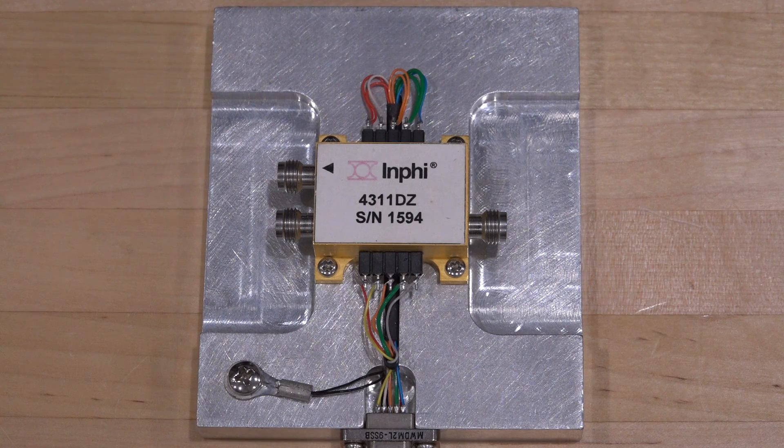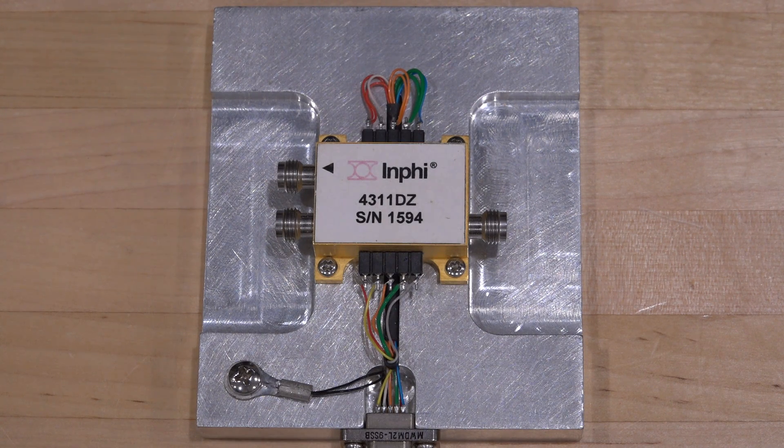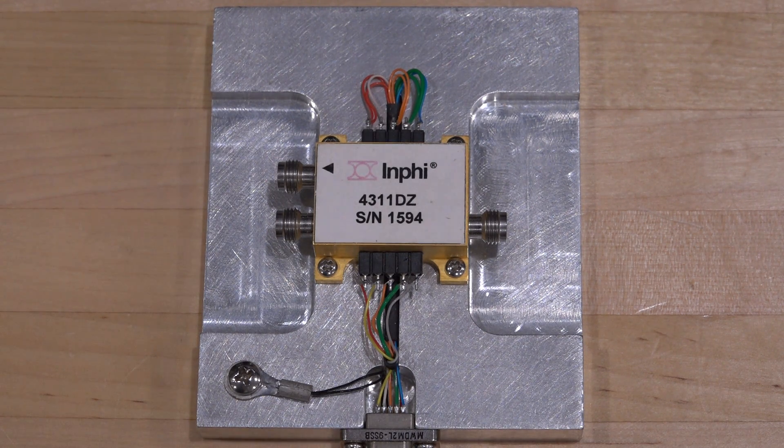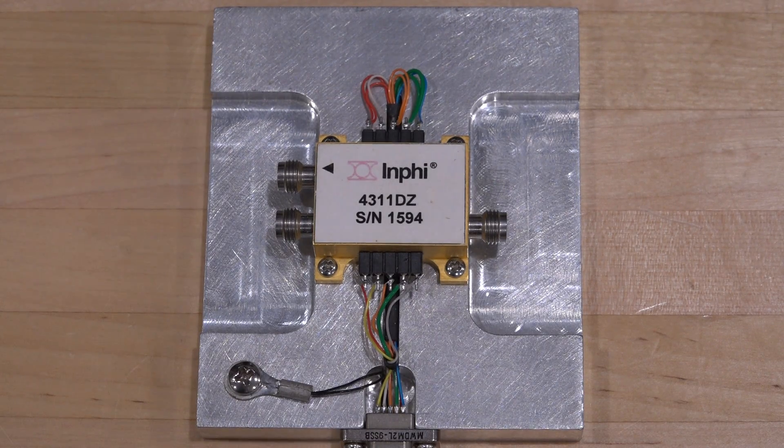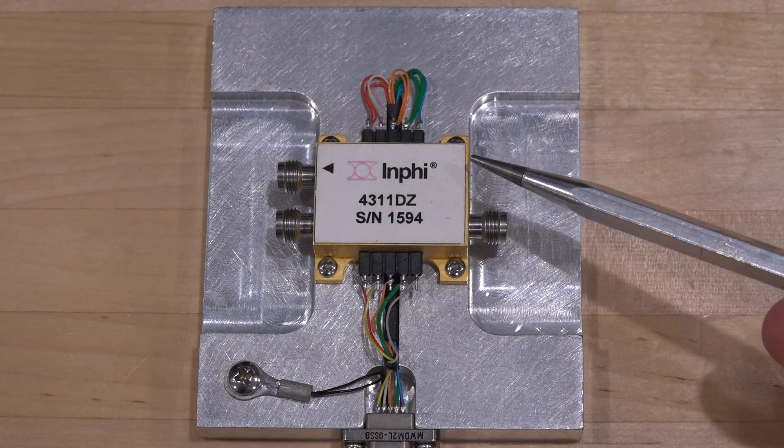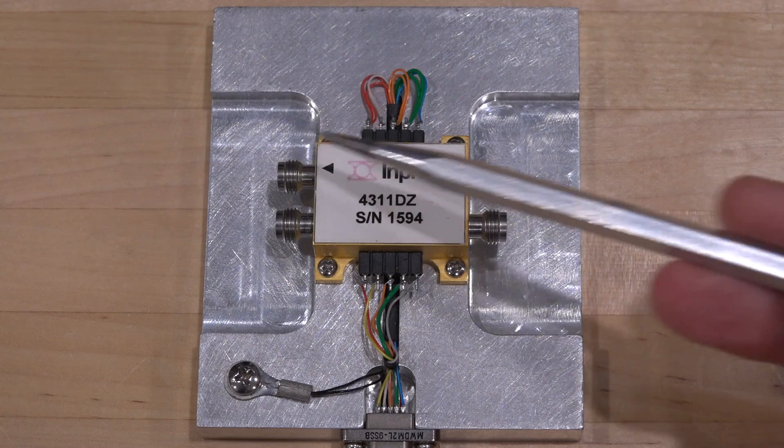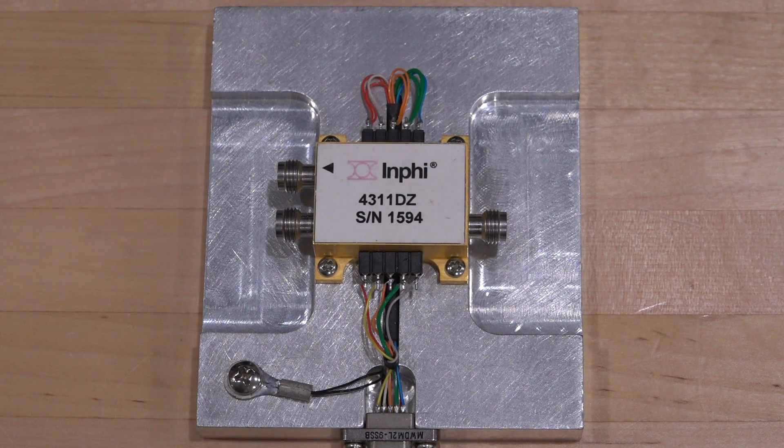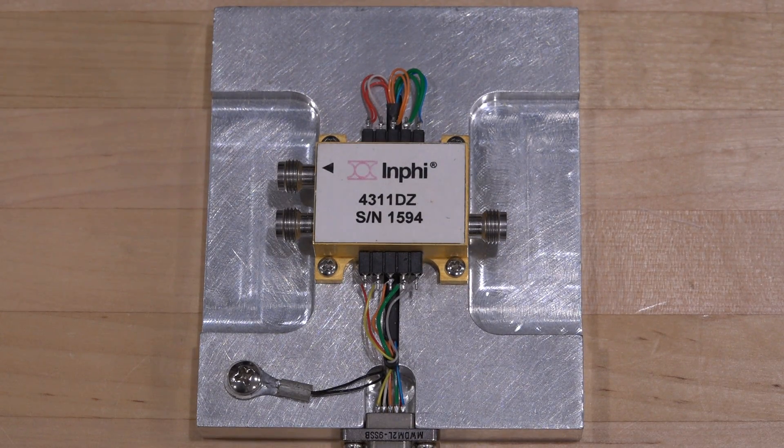It's almost certainly made of an indium-phosphide process which InFi used to design a lot of circuits in. InFi doesn't exist anymore, I think it was acquired by Marvell. Now this is a broken component, as you can see one of the connectors out here is broken. This is a differential input differential output amplifier. It's a limiting amplifier I believe and it has about maybe 15 to 20 dB of gain.